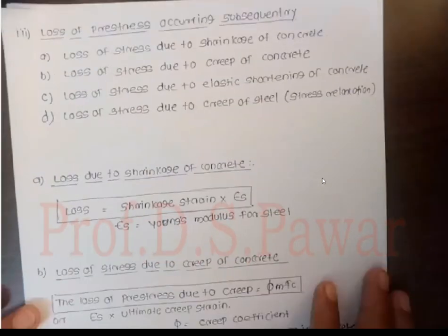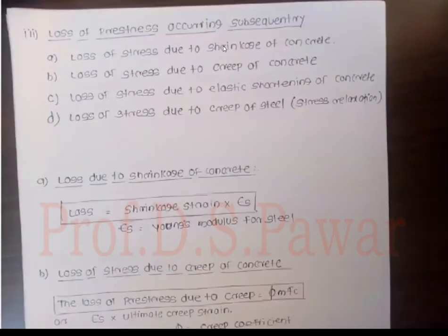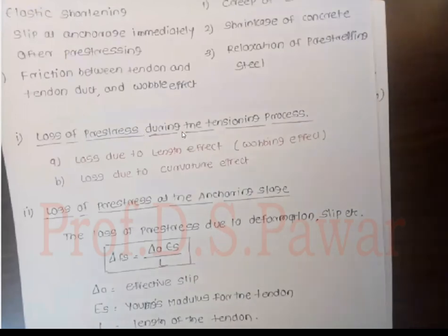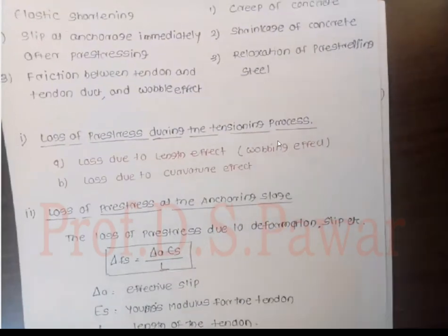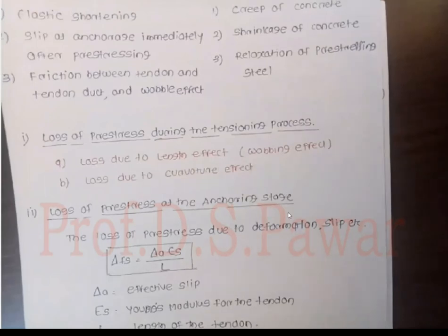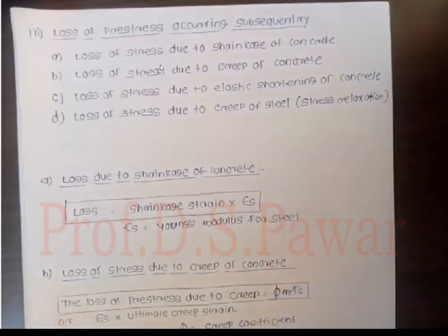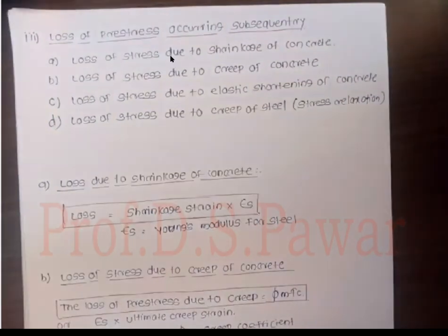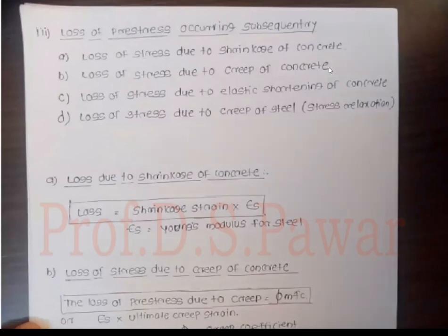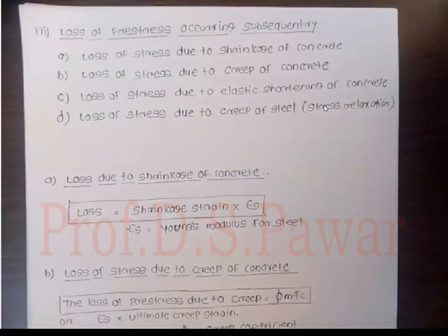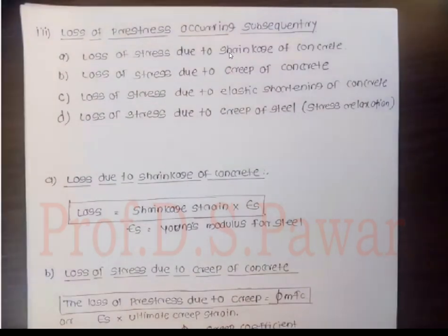Now the next category: loss of pre-stress occurring subsequently — subsequent losses. These include: loss of stress due to shrinkage of concrete, loss of stress due to creep of concrete, loss of stress due to elastic shortening of concrete, and loss of stress due to creep of steel.